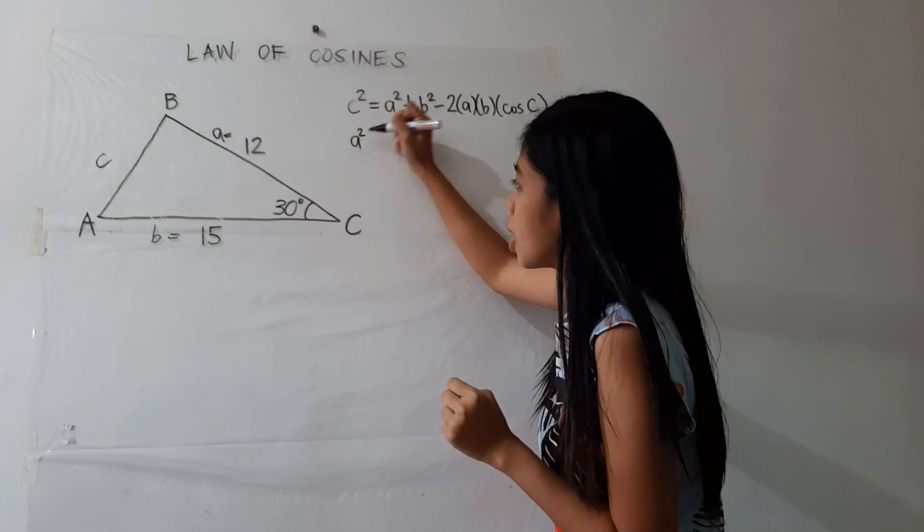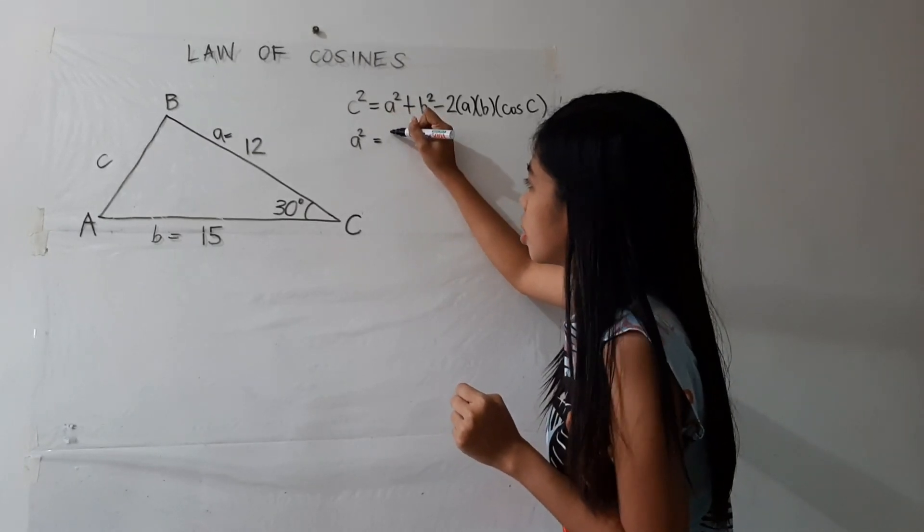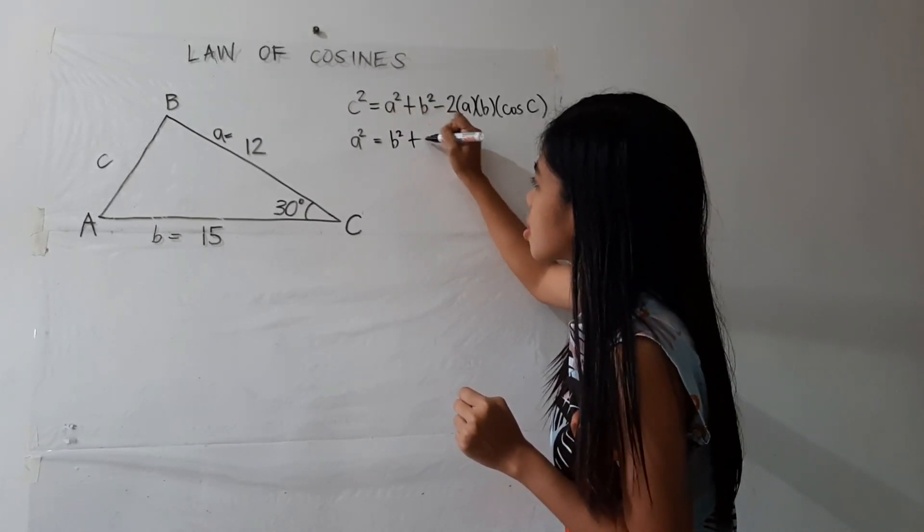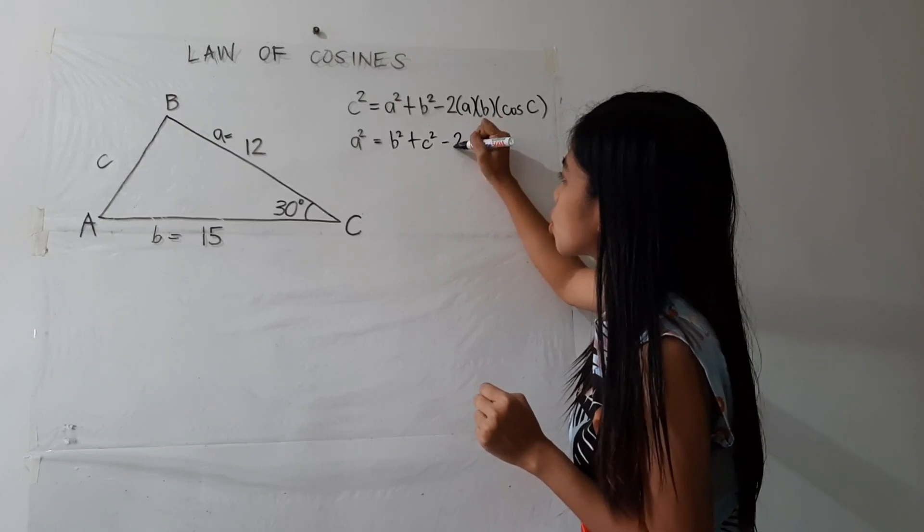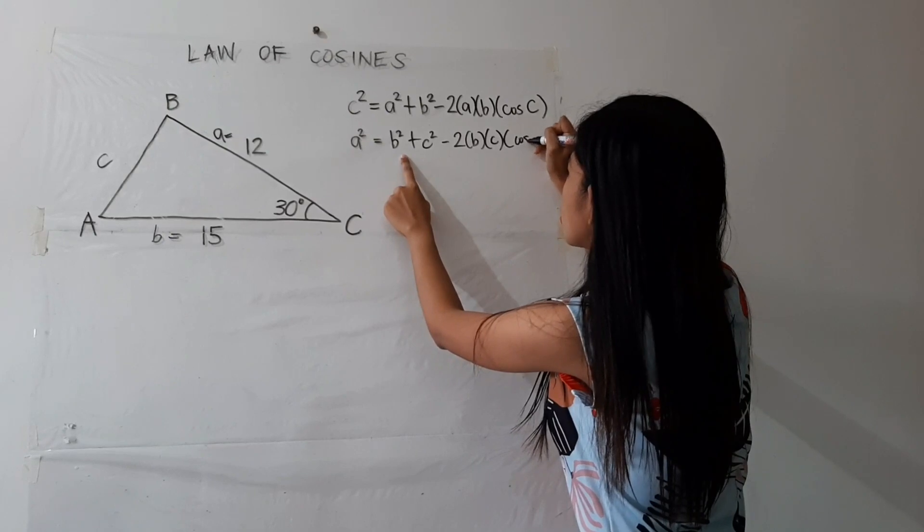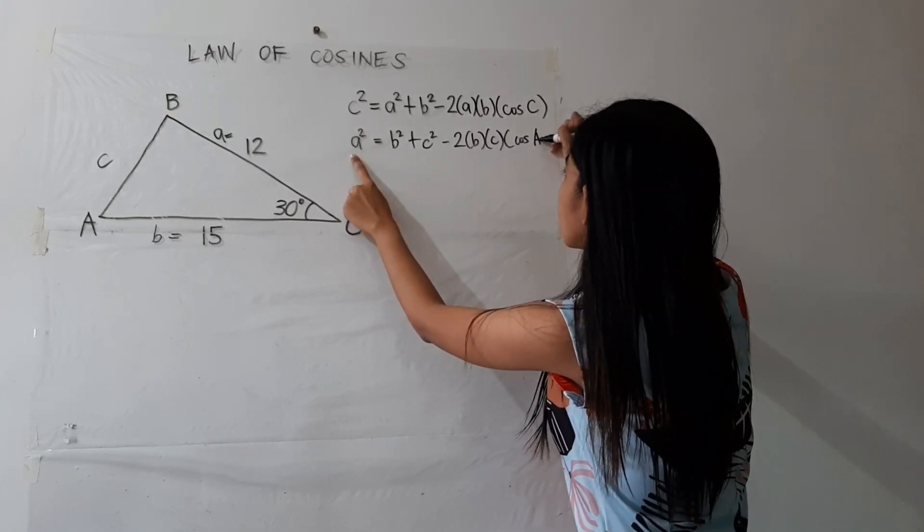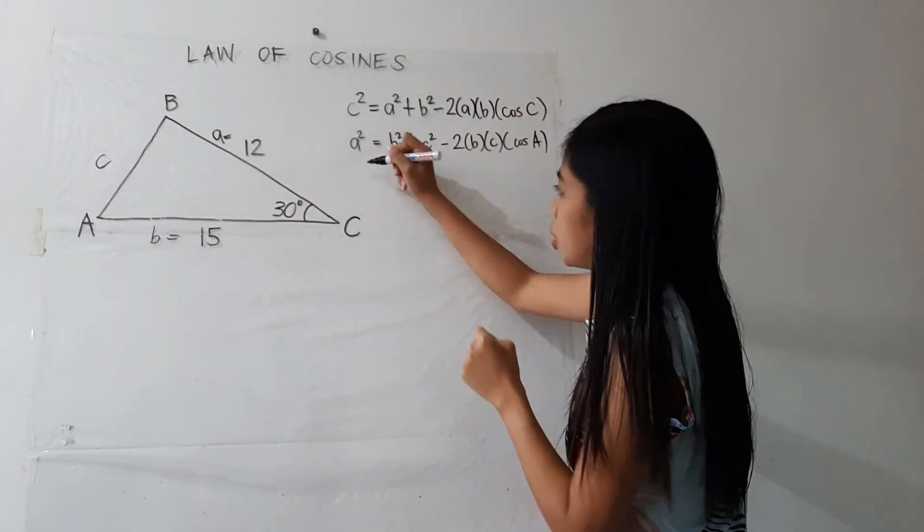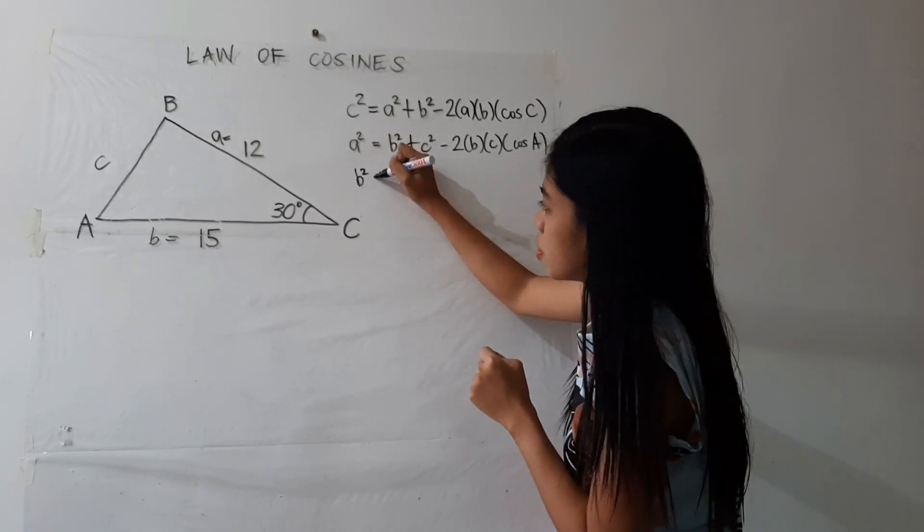Or if you were asked to find the measure of side A, you may use A squared equals B squared plus C squared minus 2 times B times C times cosine of angle A.